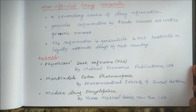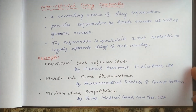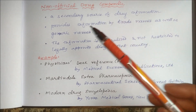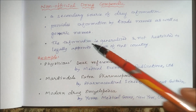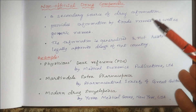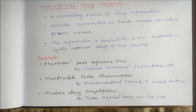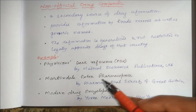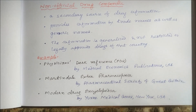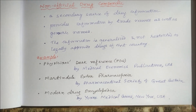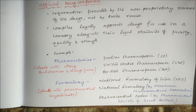Non-official drug compendia is a secondary source of drug information. It provides information by both trade names and generic names, whereas official compendia uses only generic names. The information is generalized and not restricted to legally approved drugs of a particular country. Examples include Physicians' Desk Reference by Medical Economics Publications (USA), Martindale Extra Pharmacopoeia by the Pharmaceutical Society of Great Britain, and Modern Drug Encyclopedia by York Medical Books (New York, USA).